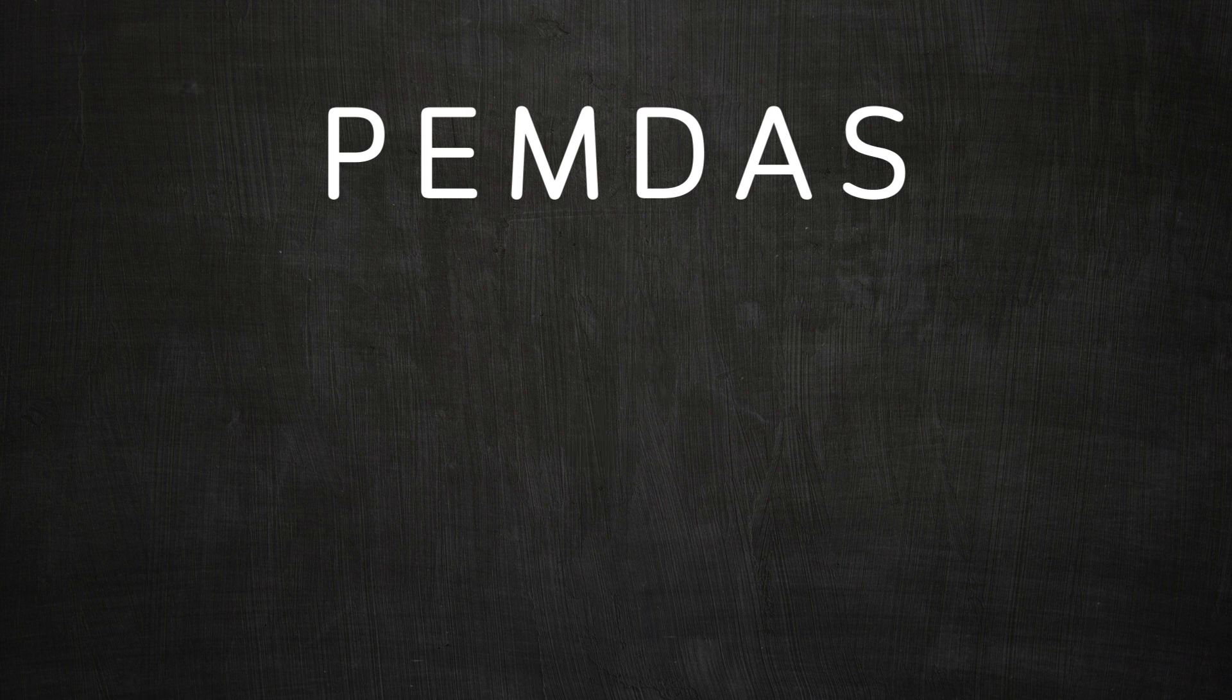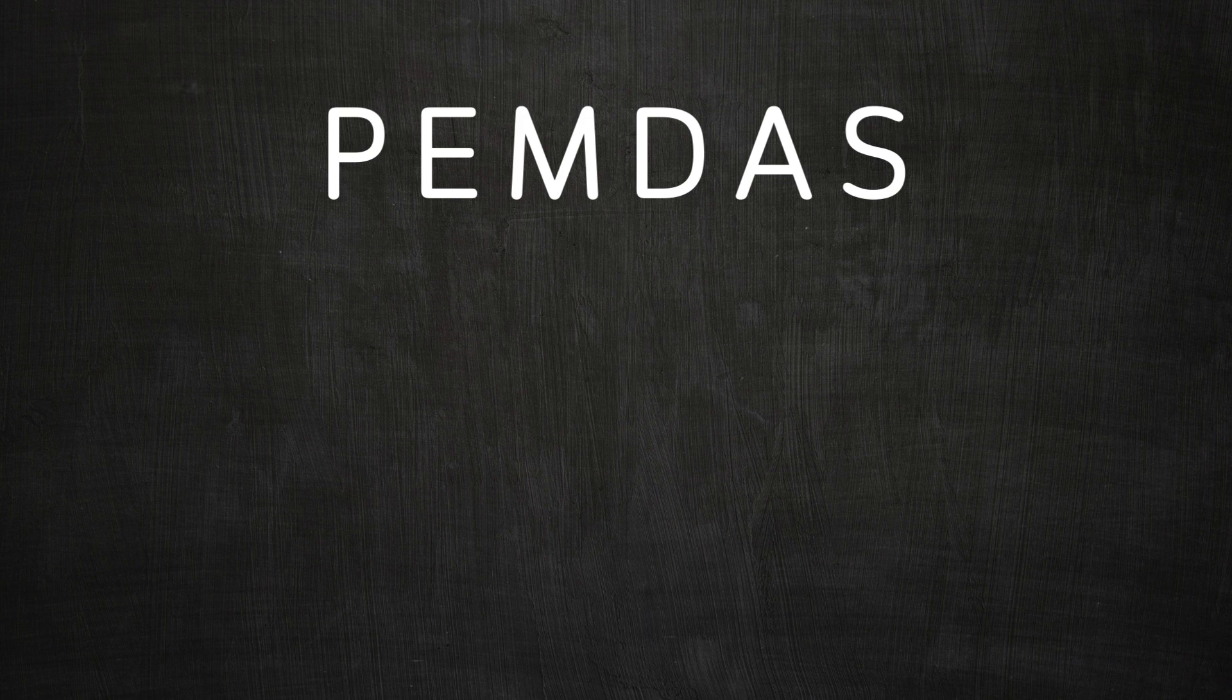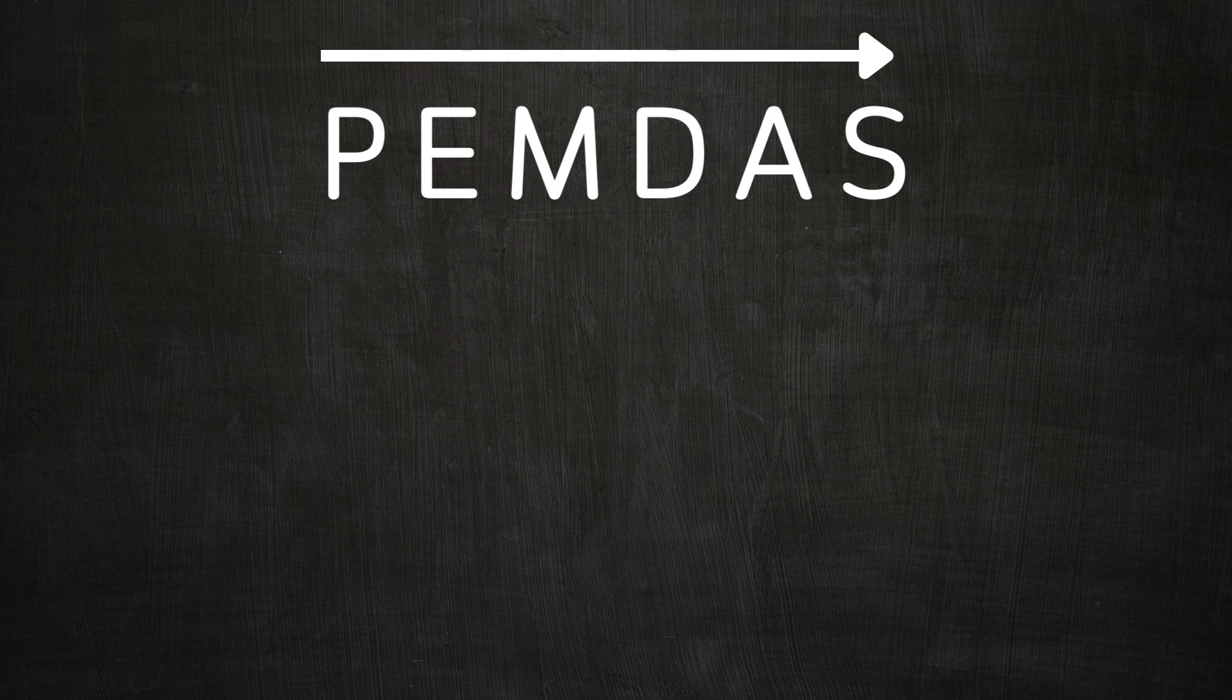Next we have M and D, multiplication and division. This is the place where many people get confused. Most people think they have to do this strictly from left to right order. In other words, they are always going to do multiplication before division, but it's wrong and that's not how this works.